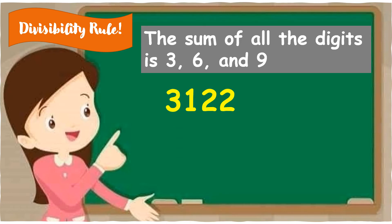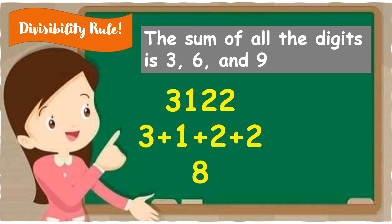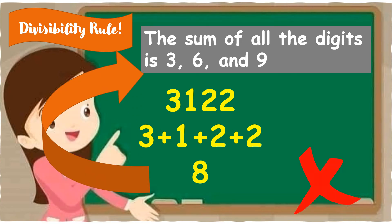We are still talking about divisible by 3. We have 3,122. So, 3 plus 1 plus 2 plus 2 — the answer is 8. Since 8 is not in the set 3, 6, and 9, therefore 3,122 is not divisible by 3.